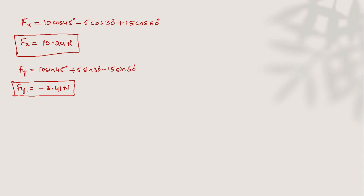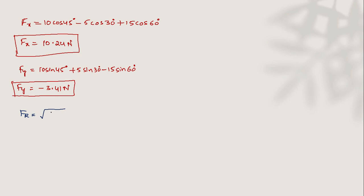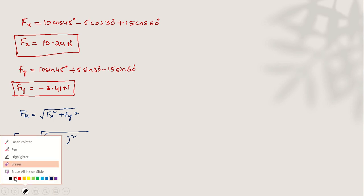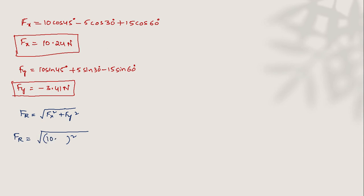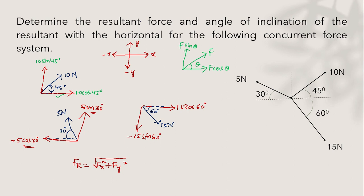Finally, we calculate the resultant FR. The formula is FR = √(FX² + FY²) = √(10.24² + (−3.41)²). Since minus squared becomes positive, FR comes out to be 10.79 Newton. This completes the first part of the question — calculation of the resultant force.